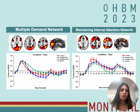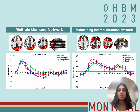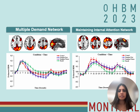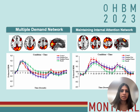In the multiple demand network, a second hemodynamic response increase suggested that attention towards environmentally relevant stimuli was once again required when participants had to complete the rating scales via button press. In other words, the suppression of the multiple demand network was released as the requirement to attend to external representations arrived once again.